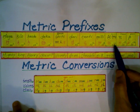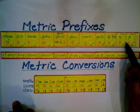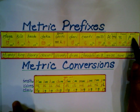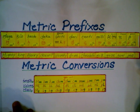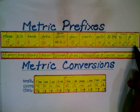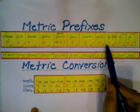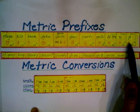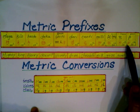Nano is 10 to the power of negative 9, and pico is 10 to the power of negative 12. These are extraordinarily small numbers. All these negative powers mean the zeros are in the denominator — we are talking about very small measurements.